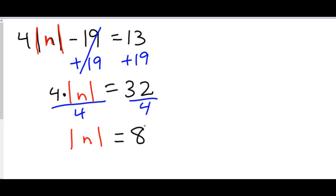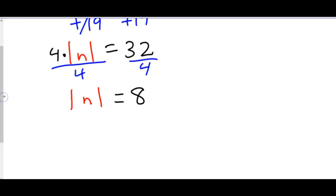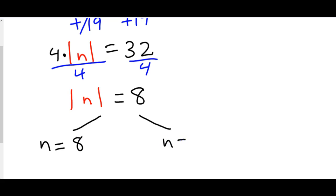Now at this point we have to do something a bit unusual. We have to split this into two separate equations. The first one will look like the same equation with no absolute value bars. The second one has everything on the left side the same, but the number on the right becomes negative — so negative 8.